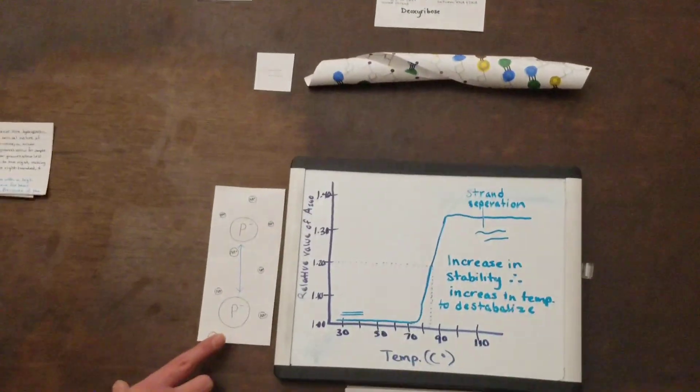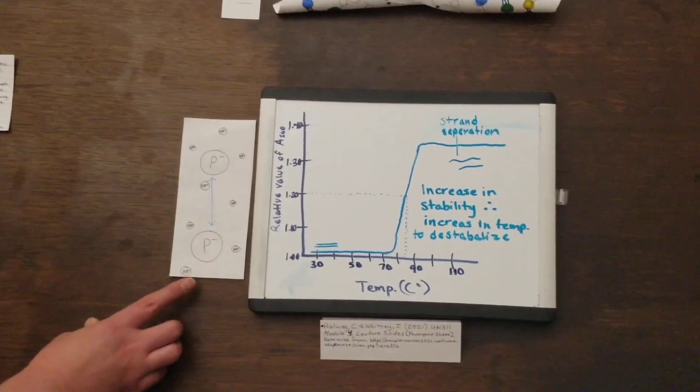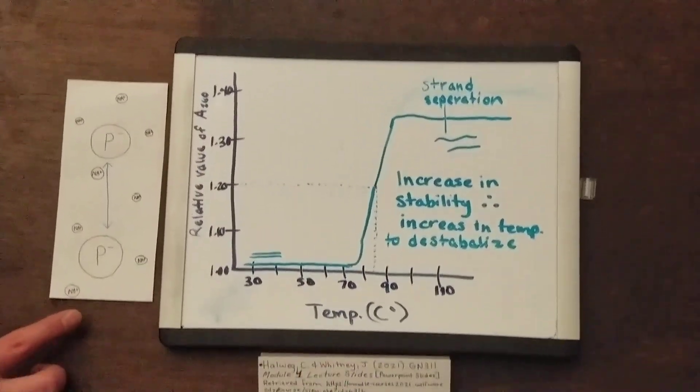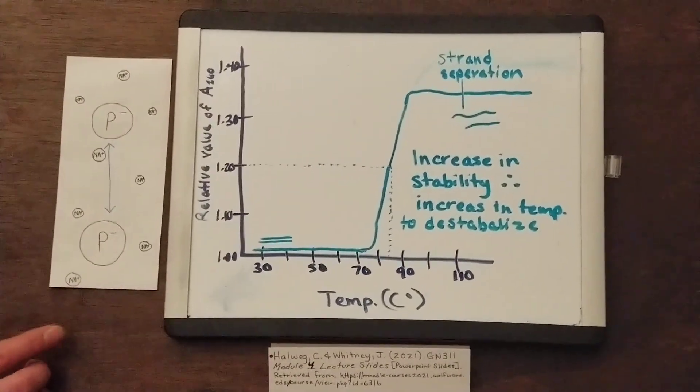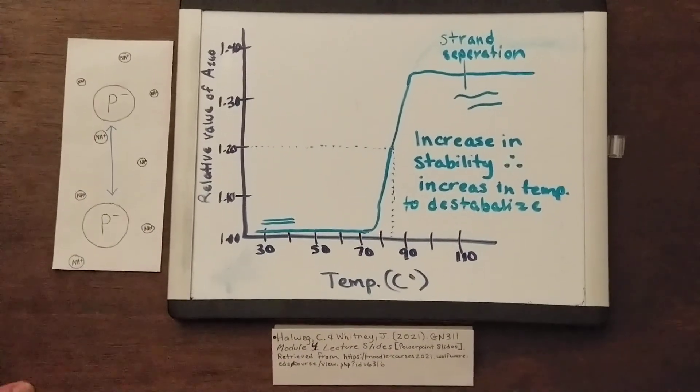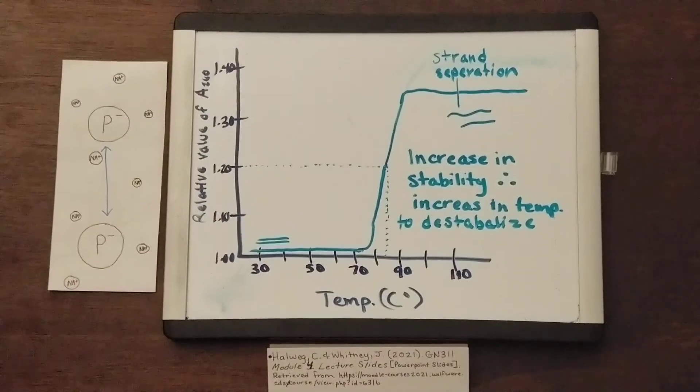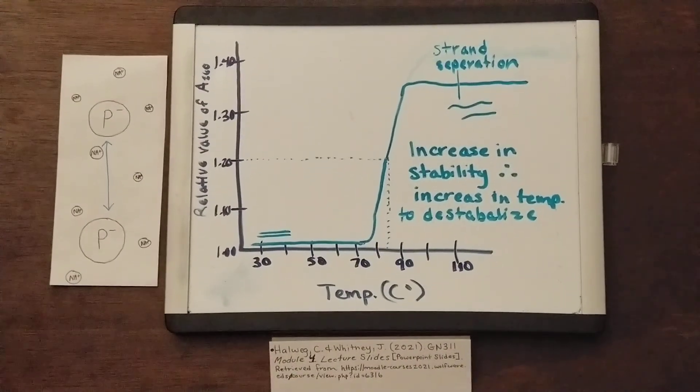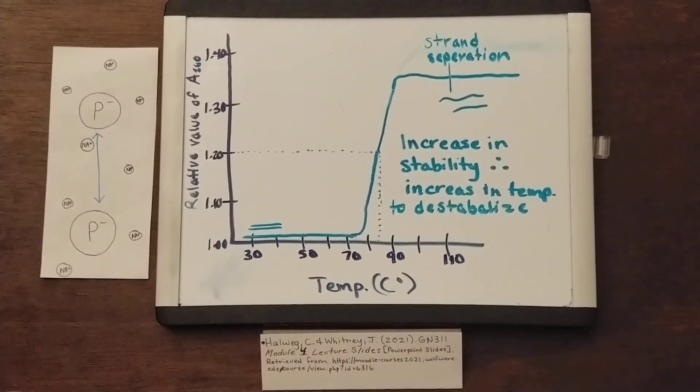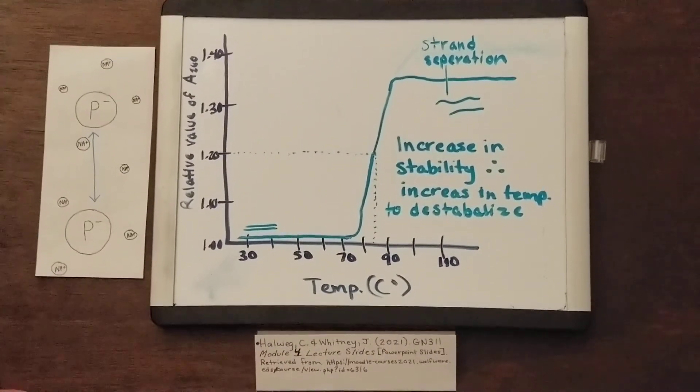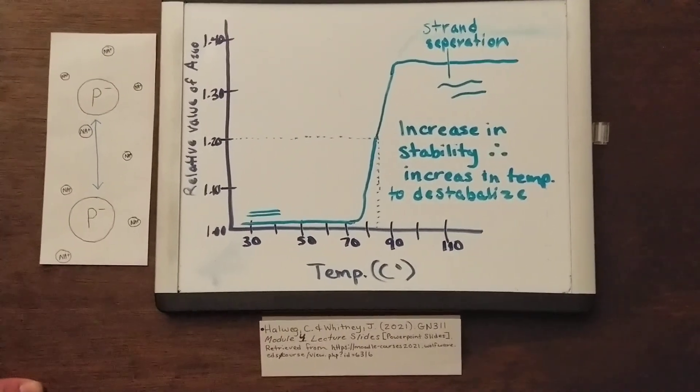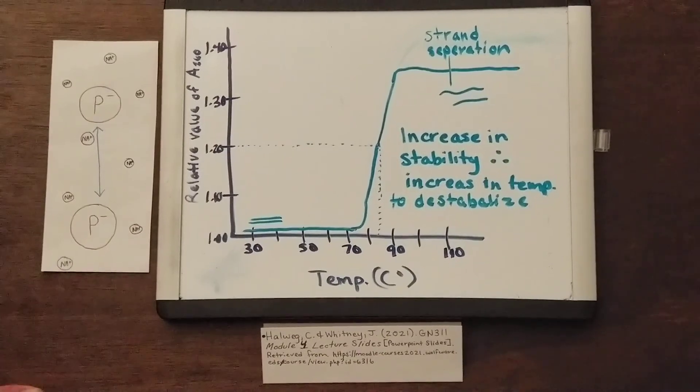If we were to place DNA in a solution with a high sodium concentration, we could achieve further stabilization of the DNA molecule. Because of the negative charges of the phosphate, there is a repulsion force acting on the backbone of the helix, essentially pushing the strands apart. Adding sodium adds positive charges and neutralizes the negative ions of the phosphate and stabilizes the hydrogen bonds and hydrophobic interactions of the bases.